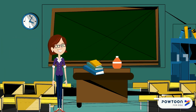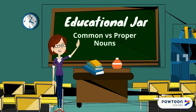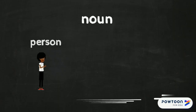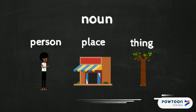Hello, and welcome to Educational Jar. Today's topic is Common Nouns vs. Proper Nouns. A noun is a person, place, or a thing. There are two main types of nouns: common and proper.